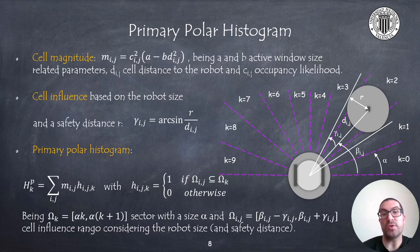Here we see some of the formulas used for building this polar histogram. As mentioned, we must first obtain the cell magnitude, which depends on the cell distance to the robot and its likelihood of being occupied, and some parameters related with the active window size. Each cell has an associated influence region, depending on the robot size, and we usually add even a safety distance to this region, and this defines an angular region, which is denoted with the variable gamma, and determines if the cell magnitudes are accumulated for a given sector k.